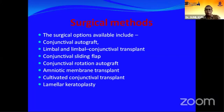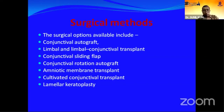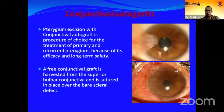Surgical options to prevent recurrence include conjunctival autograft, limbal conjunctival transplant, conjunctival sliding flap, conjunctival rotational autograft using the pterygium tissue itself, amniotic membrane transplant, cultivated conjunctival transplant, and lamellar keratoplasty. Pterygium excision with conjunctival autograft is the procedure of choice for both primary and recurrent pterygium because of its efficacy and long-term safety.